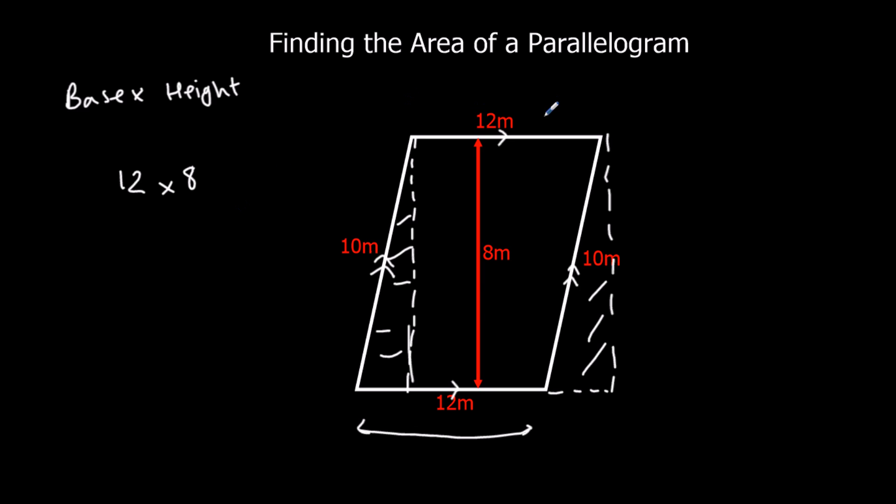That's why the area of a parallelogram is the same as the area of a rectangle—it's the base times the perpendicular height. 12 times 8 is 96, so it's 96 meters squared.